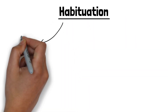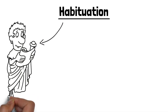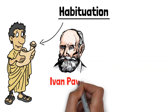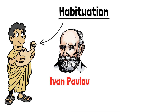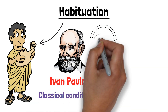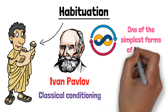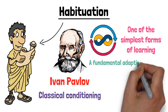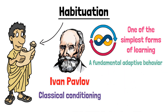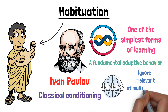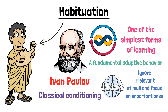The term habituation has its origins in the early studies of animal behavior, and was first extensively studied by the psychologist Ivan Pavlov, known for his work on classical conditioning. Habituation is considered one of the simplest forms of learning and is a fundamental adaptive behavior that allows organisms to ignore irrelevant stimuli and focus on important ones.